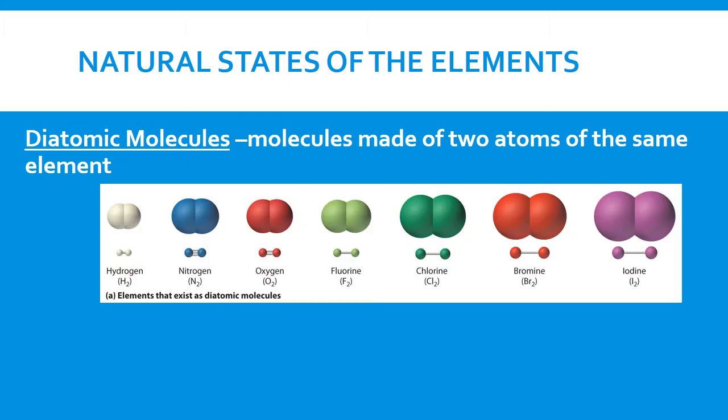So we have iodine, bromine, chlorine, fluorine, oxygen, nitrogen, and hydrogen. And you see the H with a subscript of 2, or they all have a subscript of 2, indicating that there are two atoms of that element present. And that's why they're called diatomic molecules.